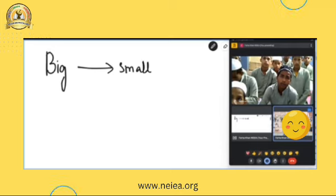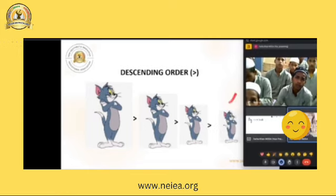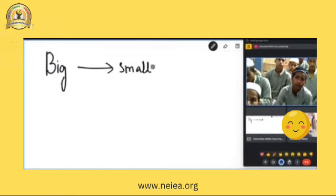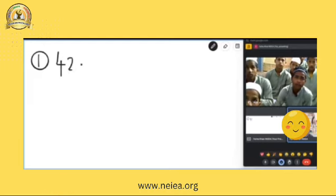Okay, like this, bigger to smaller. So now let me write three-digit numbers here. I will write three-digit numbers here, and you will call the descending order. Okay? You will also write in your book.